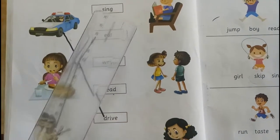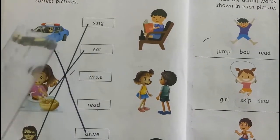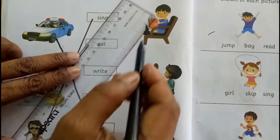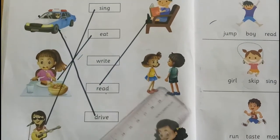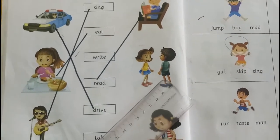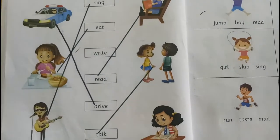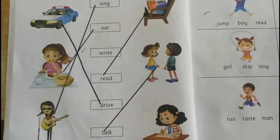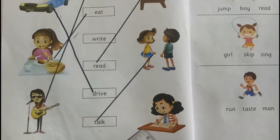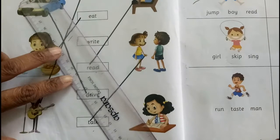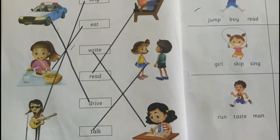On this side they have given some other pictures. Can you identify what this boy is doing? Read — so you have to draw a line to read. And these kids, what are they doing? They are talking with each other — talk, draw a line to talk. And the last picture on book page number 52: she is writing — write, so you have to draw a line to write. Like this you have to do this book exercise.